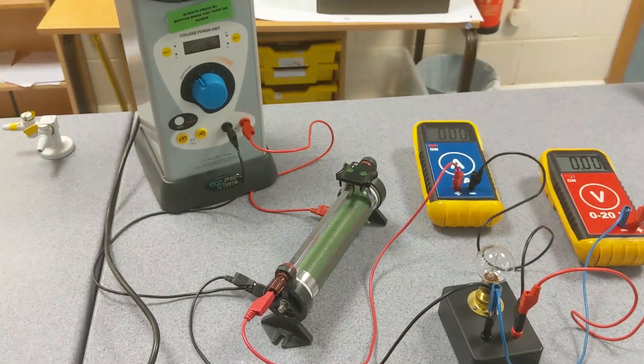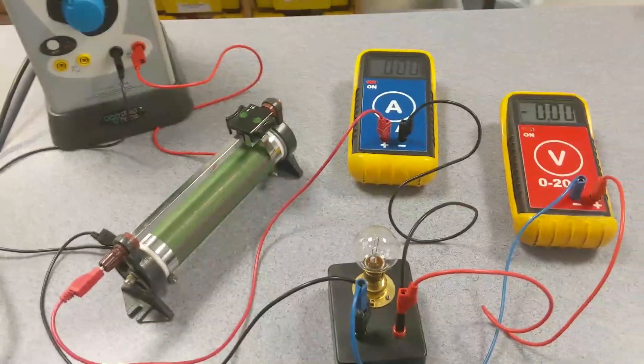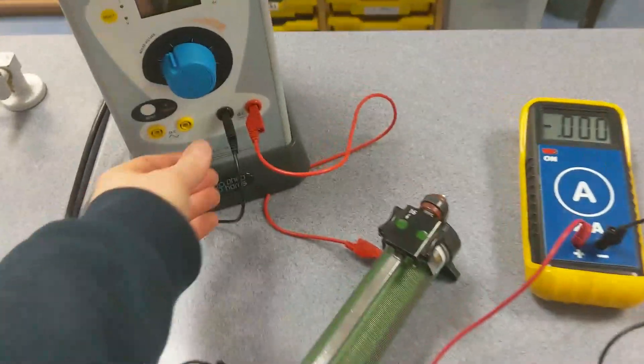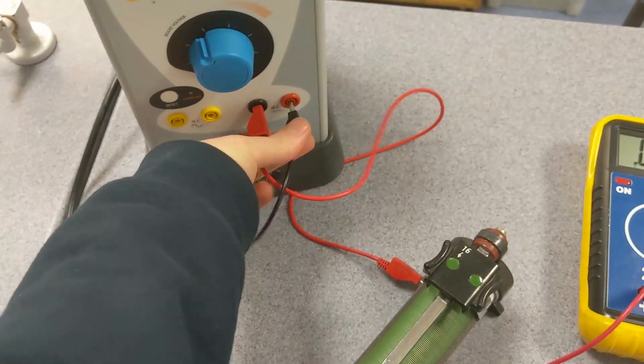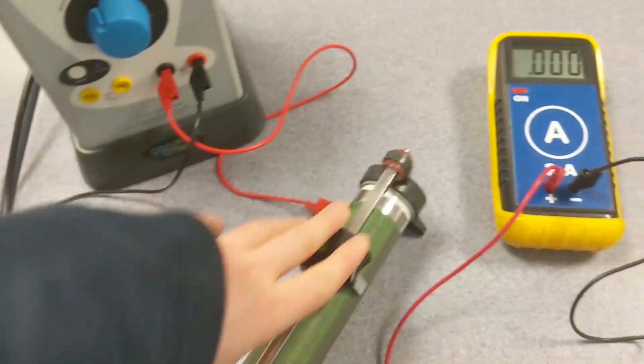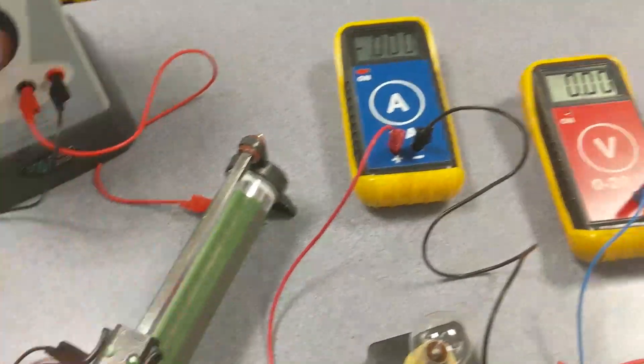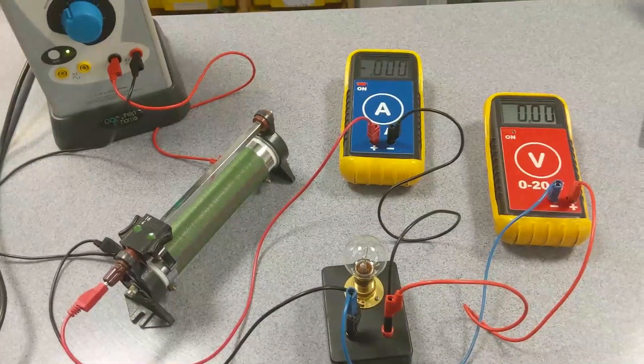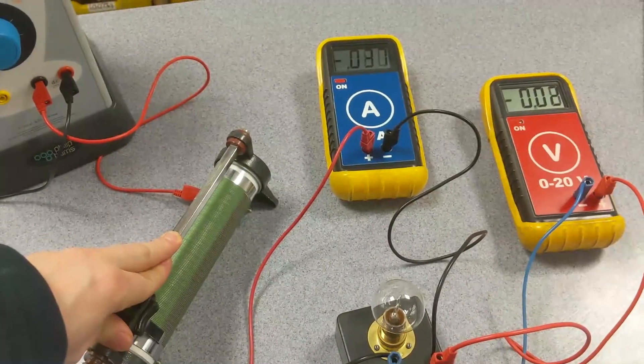Now the second thing we need to do is take the negative readings, so the way I'm going to do that is I'm going to swap these terminals over. I'm going to set this to zero. So I haven't touched that now. I'm going to fire it back up. You can see zero. I'm going to aim for the same points as before.